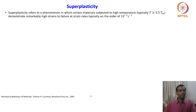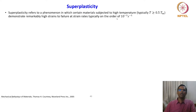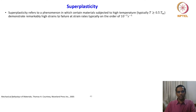Superplasticity refers to a phenomenon in which certain materials subjected to high temperature — typically temperature greater than or equal to 0.5 Tm — demonstrate remarkably high strains to failure at strain rates typically in the order of 10 to the power minus 3 per second. We are talking about materials exhibiting remarkably high uniform elongation without necking.